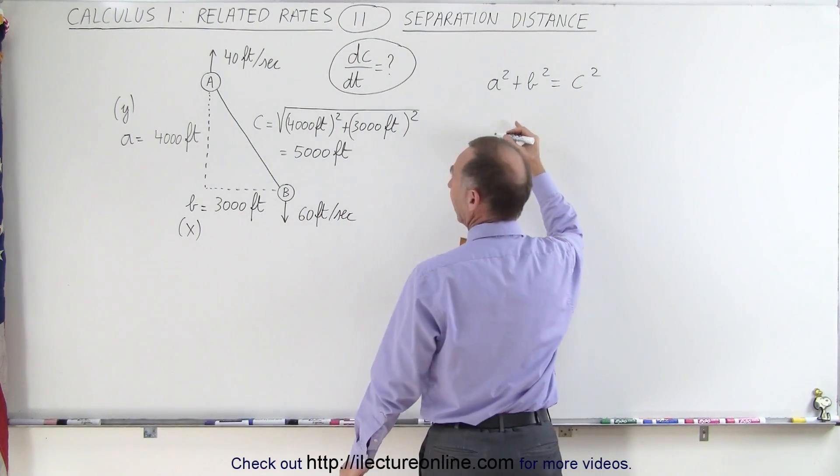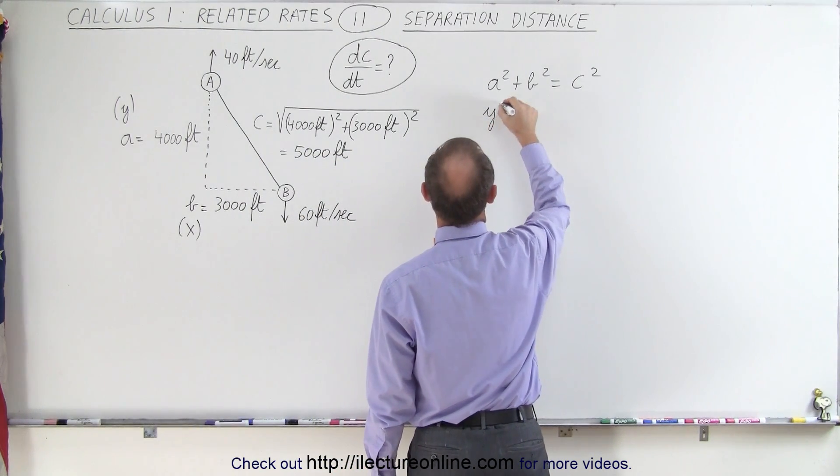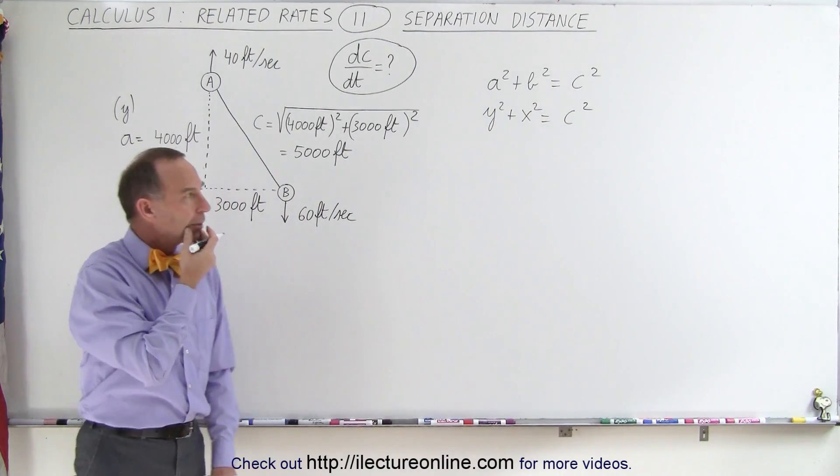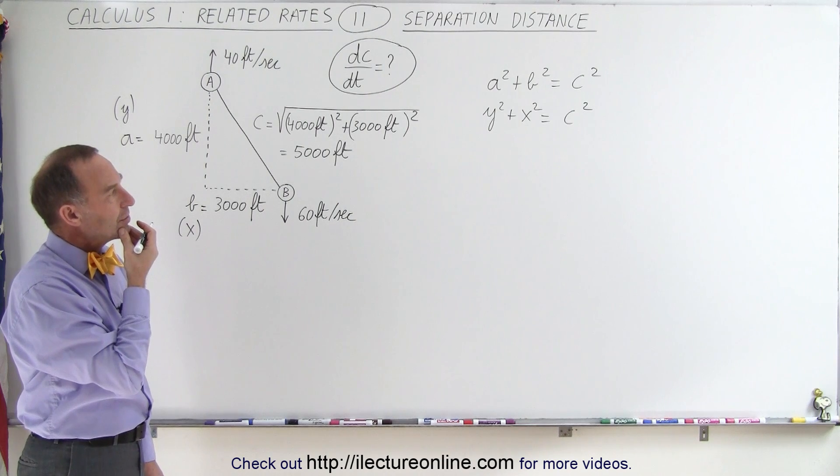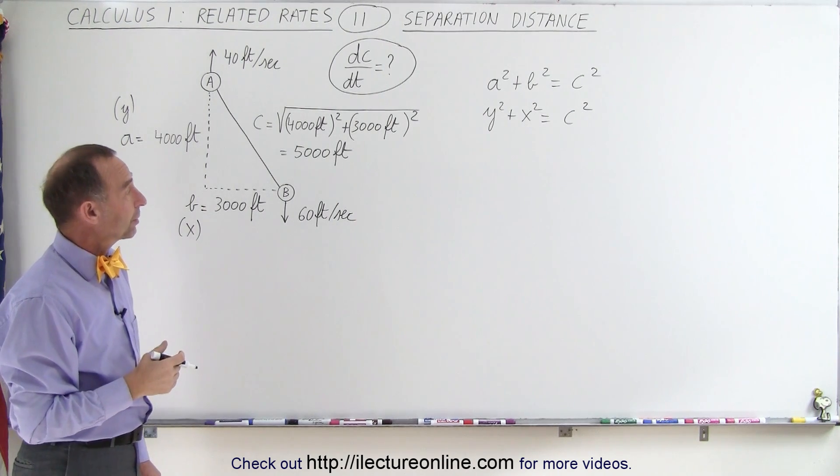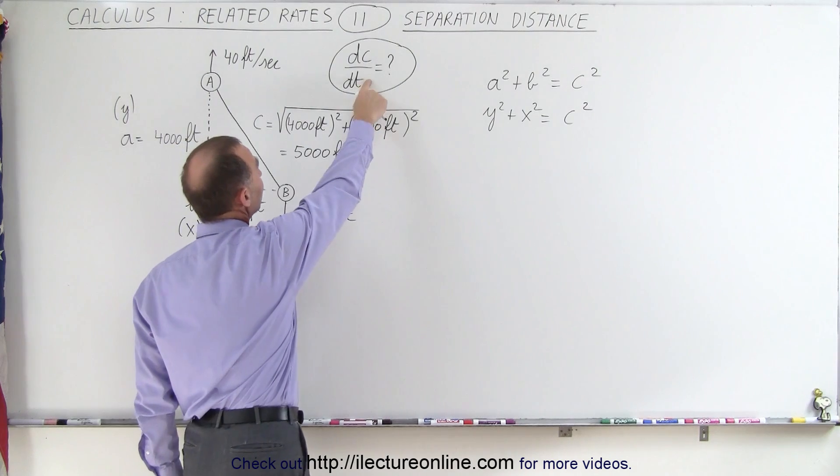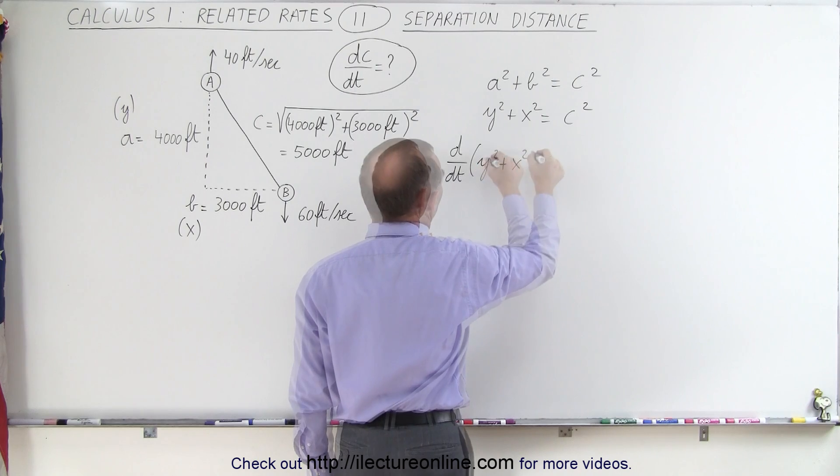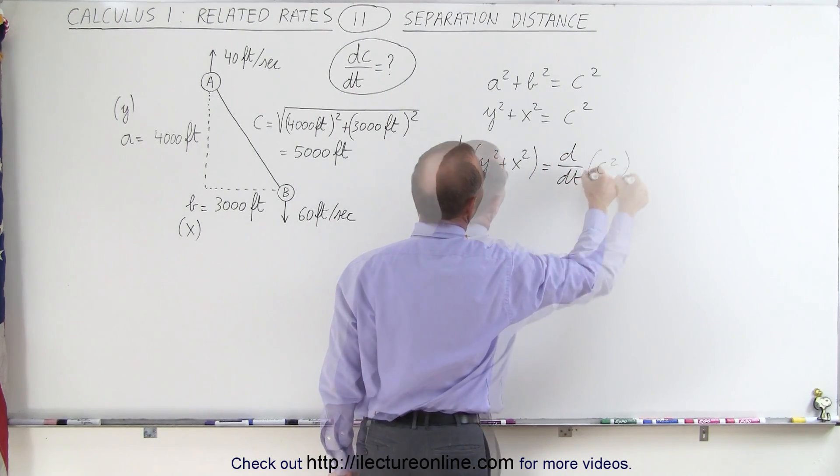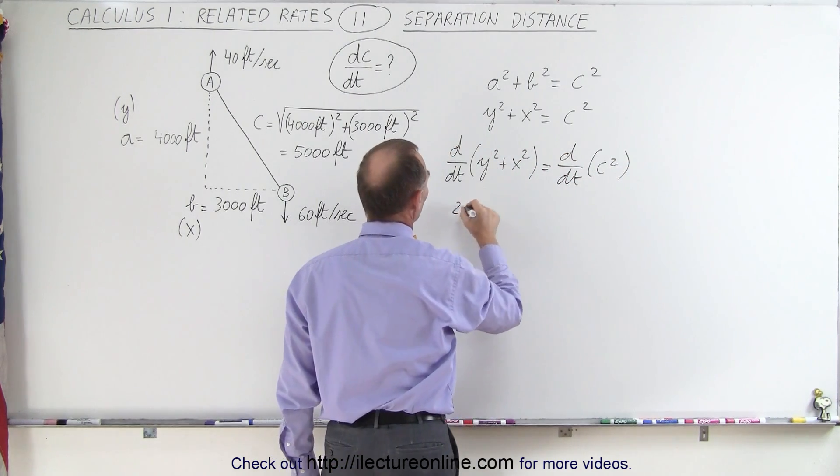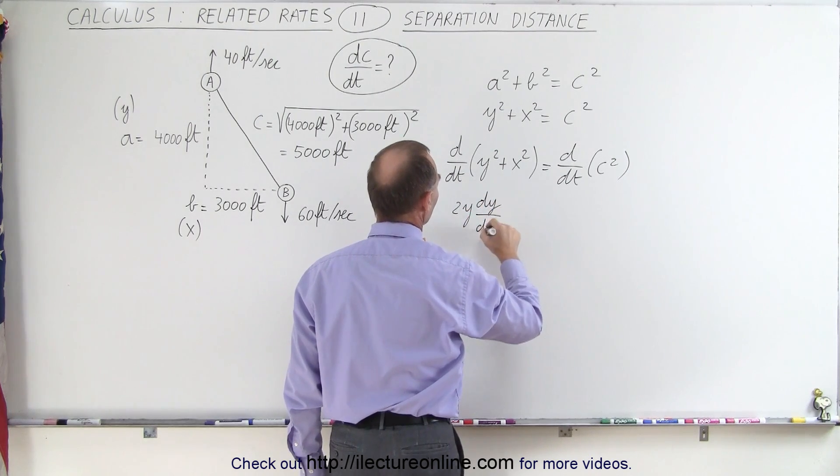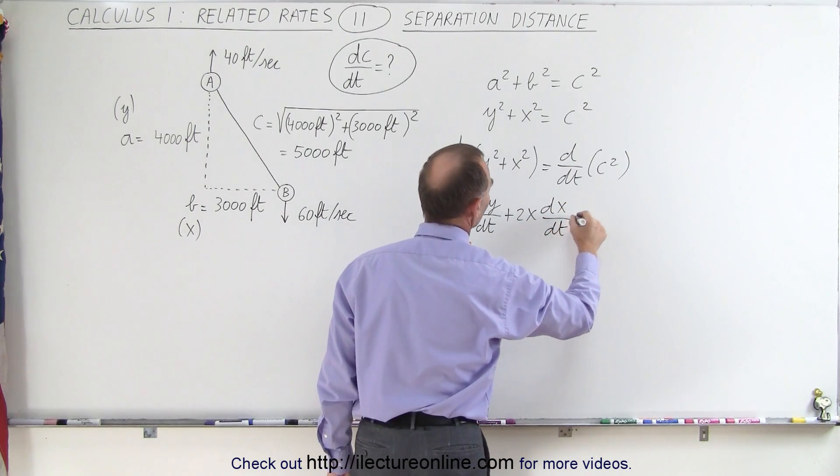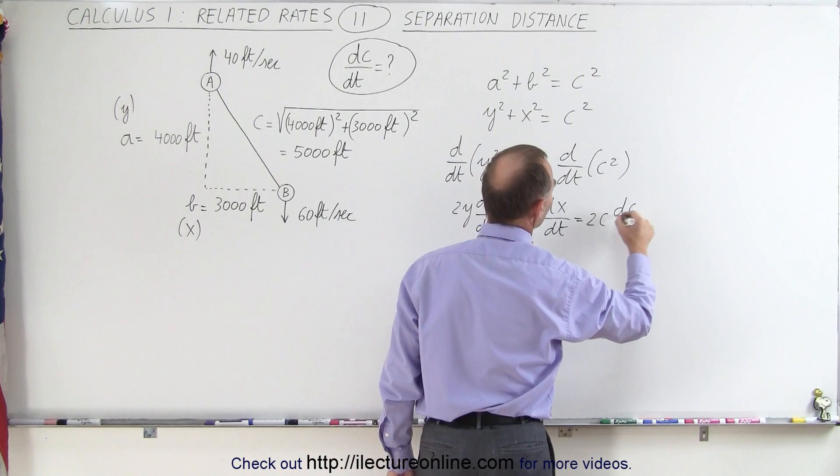So in this case, we can say Y squared plus X squared is equal to C squared. So we could also write it like that. Okay, what we want to do now is take the derivative of both sides with respect to time so that we can find dC/dt. So let's do that. The d/dt of the left side is equal to the d/dt of the right side.